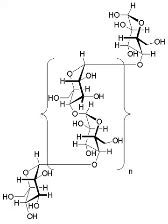Glycogen is found in the form of granules in the cytosol in many cell types and plays an important role in the glucose cycle. Glycogen forms an energy reserve that can be quickly mobilized to meet a sudden need for glucose, but one that is less compact than the energy reserves of triglycerides. It is also found as storage reserve in many parasitic protozoa.